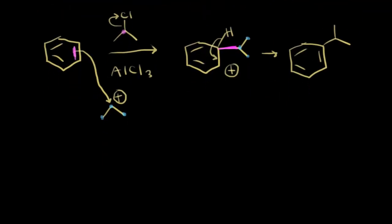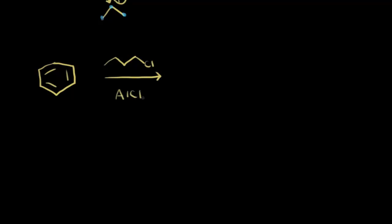Let's do one more Friedel-Crafts alkylation — this one with a possible rearrangement. We start with benzene and add butyl chloride: one, two, three, four carbons with a chlorine, and aluminum chloride as catalyst. Thinking about the carbocation that forms: the chlorine kicks off, taking away a bond from that terminal carbon, giving us a plus 1 formal charge there — a primary carbocation. Primary carbocations are not very stable, so there could be rearrangement.